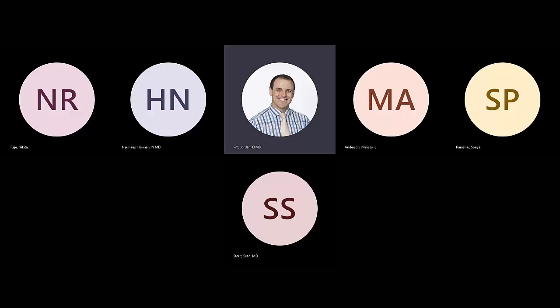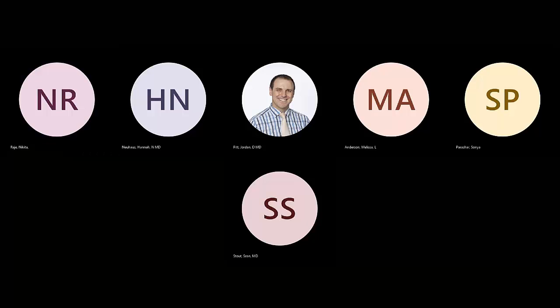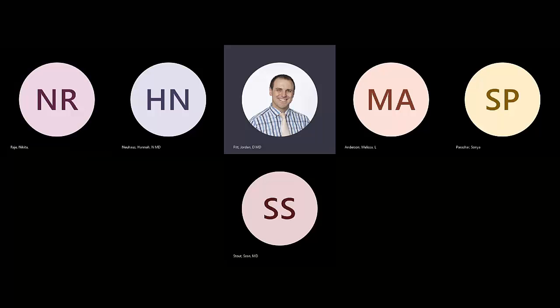Mast cells vs. basophils: mast cells are produced in bone marrow, require stem cell factor (c-Kit ligand) for development, release histamine and tryptase, and are primarily in tissues. Basophils are somewhat similar — they can make similar mediators and are also produced in bone marrow — but are primarily in the blood. Both have IgE receptors on them.